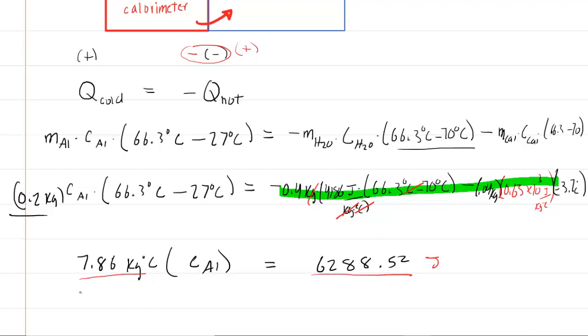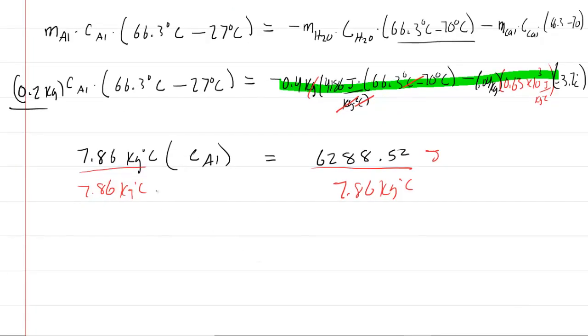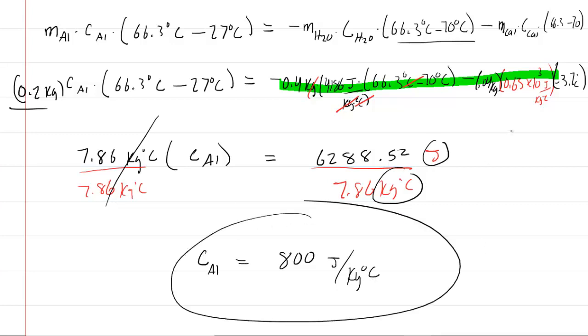Finally, just divide both sides of the equation by the 7.86 number. And when you do that, you will see that the specific heat of the aluminum is about 800. These will cancel, so you get the specific heat of aluminum is 800. And then dimensionally, we have joules divided by kilogram degrees Celsius. So this would be the correct answer to the question.